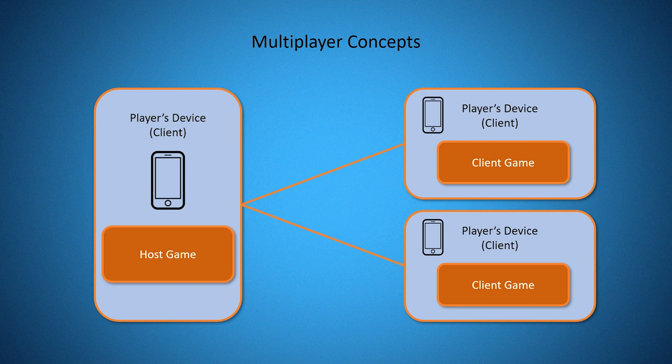Probably one of the most important things when it comes to how a multiplayer game works and how to synchronize a game across the network is what's called an RPC function, or a Remote Procedure Call. These are functions that you call on one device and then it sends a message across the network to all the other clients, which will then run that same function. I'm going to show you how these work using the Unity networking service, and then using the Photon plugin.